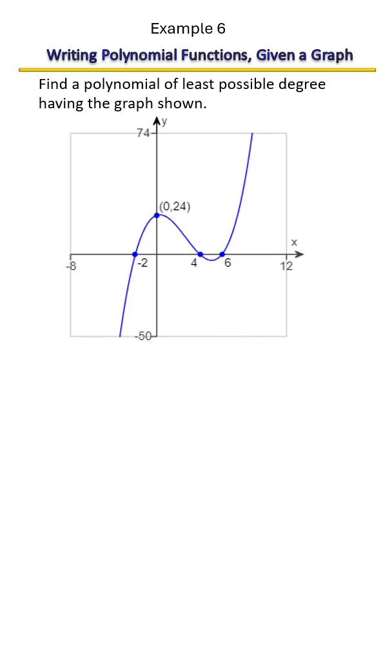Find a polynomial of least possible degree having the graph shown. So what they want us to do here is to write a polynomial given the graph. We're going to use all the information we've learned so far about polynomials, starting with end behavior.